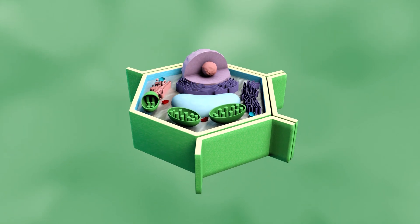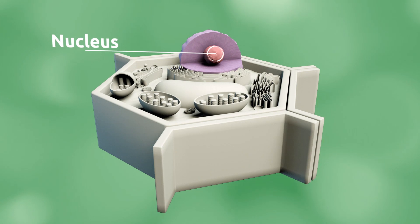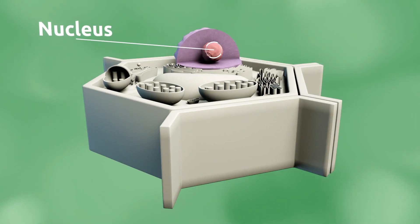A plant cell is a eukaryotic cell. The nucleus is in charge of all cell functions. DNA is stored in the nucleus.